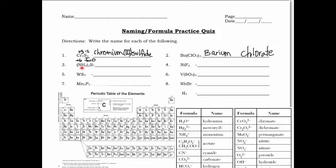Number three is one of those positive polyatomic ions seen at the beginning of Table E, so we just name that what we see — it's ammonium. The second part is a simple element, so we change the ending to -ide. It's ammonium sulfide.